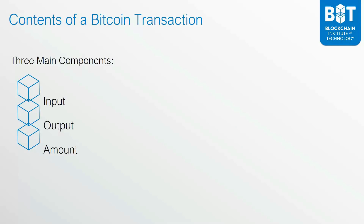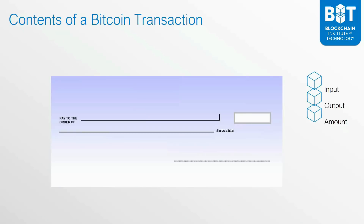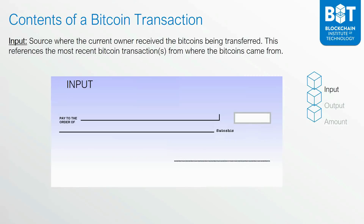We will now see how these three main components tie into a Bitcoin transaction by describing it within the imagery of a check. The input corresponds to the source where the current owner of the bitcoins received those bitcoins from. It references the most recent Bitcoin transactions from where those bitcoins came from. The input can make reference to multiple transactions, and for one specific transaction you may have to reference previous transactions in order to add them all up and get the amount needed to transfer.